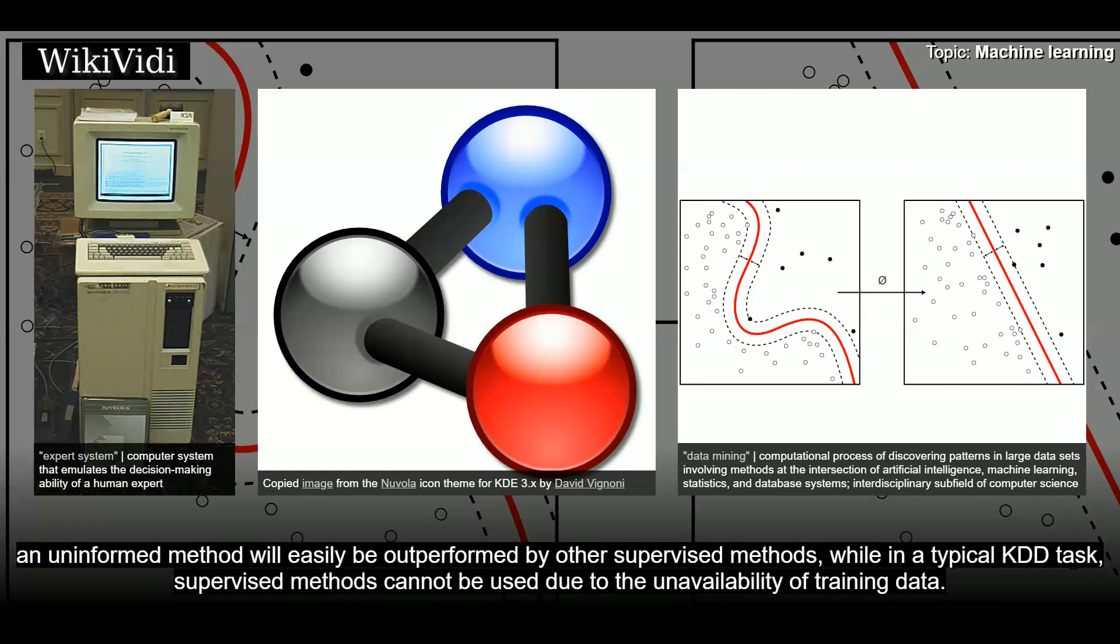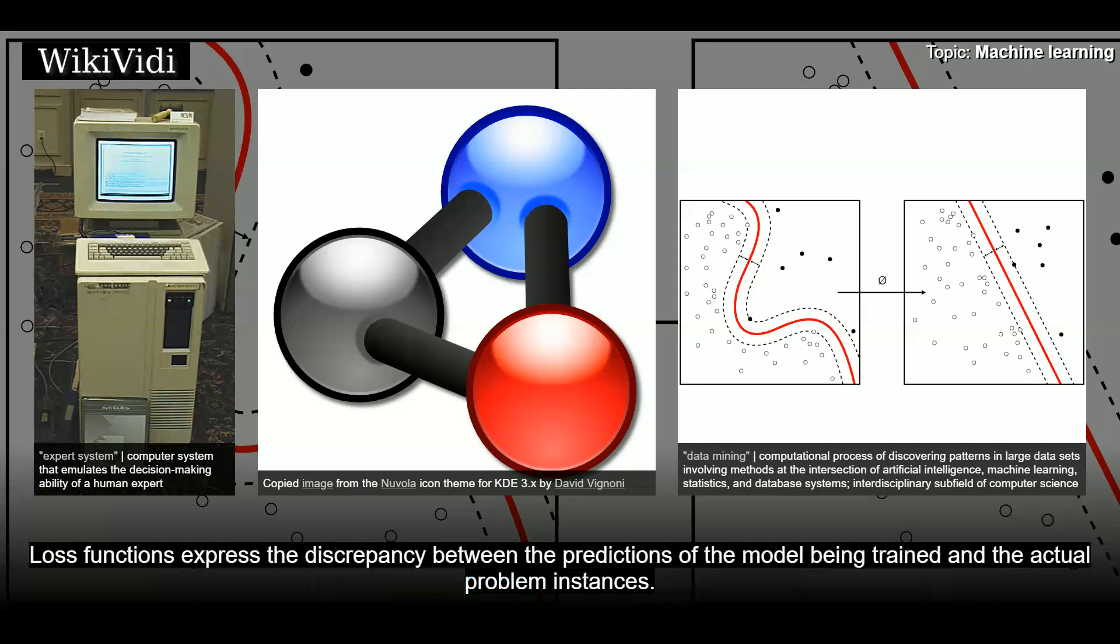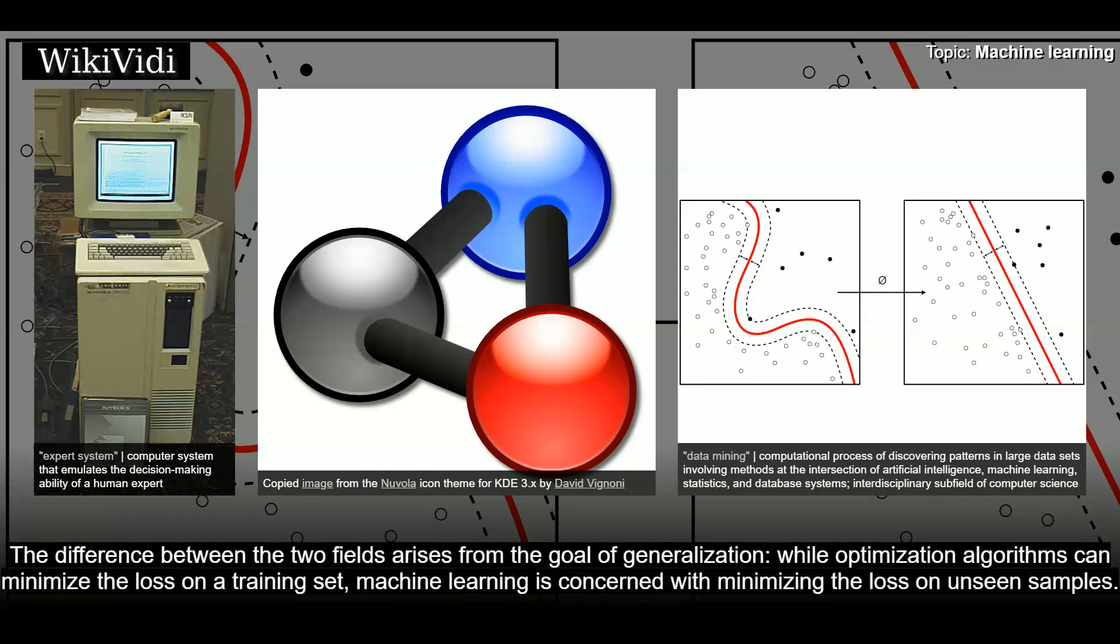Machine learning also has intimate ties to optimization. Many learning problems are formulated as minimization of some loss function on a training set of examples. Loss functions express the discrepancy between the predictions of the model being trained and the actual problem instances. The difference between the two fields arises from the goal of generalization. While optimization algorithms can minimize the loss on a training set, machine learning is concerned with minimizing the loss on unseen samples.